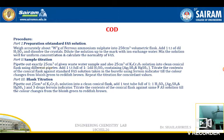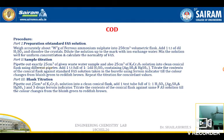Coming to the experimental part, we have to first prepare a standard solution — standard FAS solution — for our burette. The standard solution used is ferrous ammonium sulfate. Wash all the apparatus cleanly with distilled water. Add the given ferrous ammonium sulfate crystals to a cleanly washed 250 ml volumetric flask. Importantly, you are adding one test tube of dilute H2SO4.